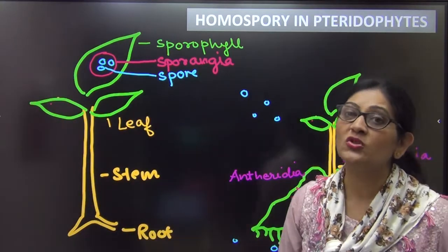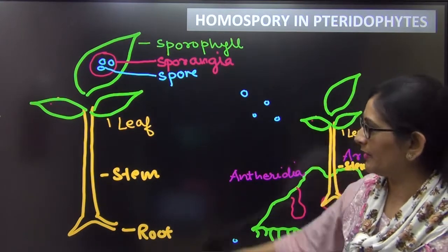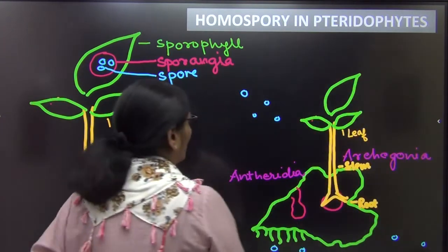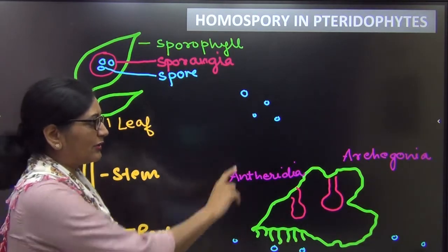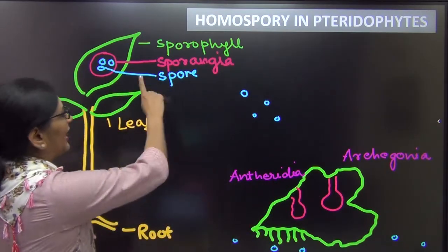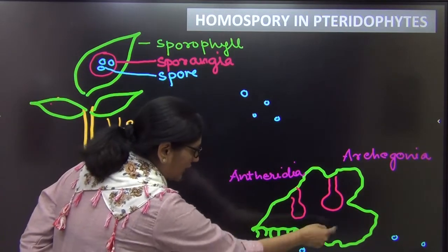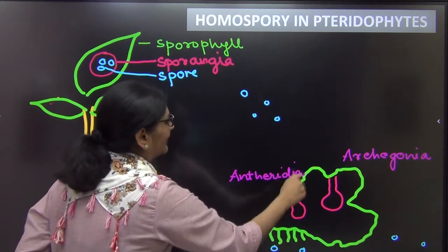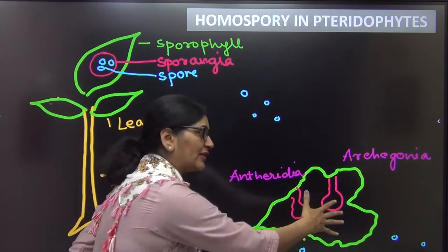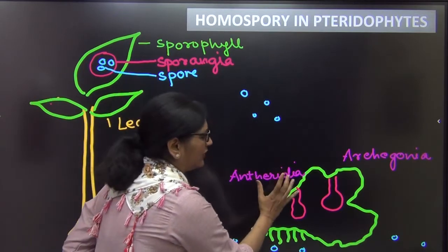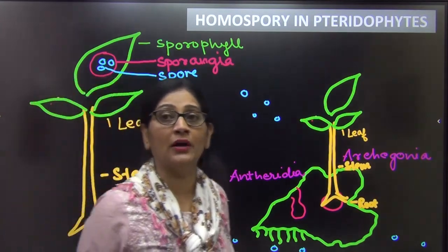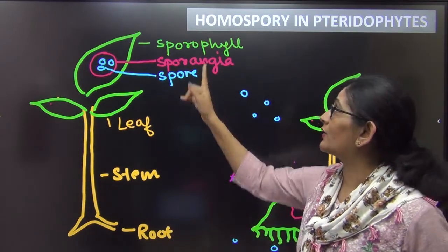Why do we call pteridophytes homosporous? Because only one type of spore is formed. The main plant body is a sporophyte, it forms spores, and it just forms one type of spore. That one type of spore forms one type of gametophyte. This one gametophyte has both antheridia and archegonia. So the plant forms one type of spore which forms one type of gametophyte, and this gametophyte contains both antheridia and archegonia. The gametophyte is not specialized as either male or female — it can bear both male and female organs. Since it forms a single type of spore and a single type of gametophyte, they are called homosporous.